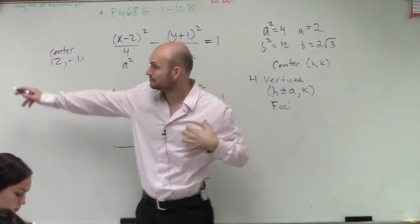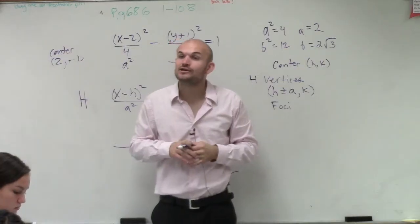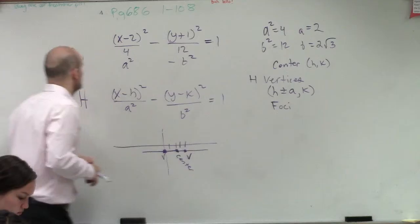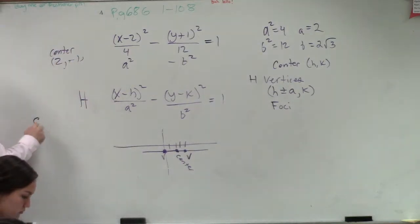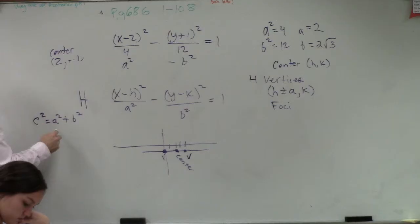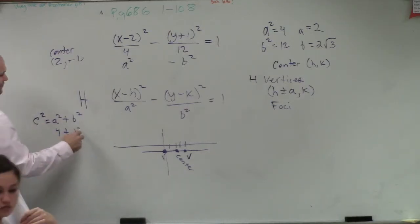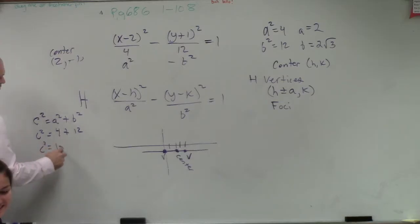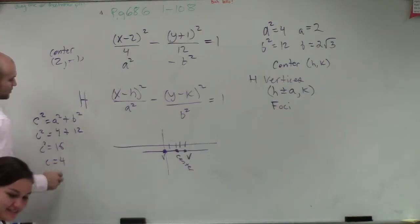Now there was an equation over there, which I showed you how you can relate to all three of them. So our equation goes C squared equals A squared plus B squared. So A squared is 4 plus B squared, which is 12, equals C squared. So C squared equals 16. C equals 4.